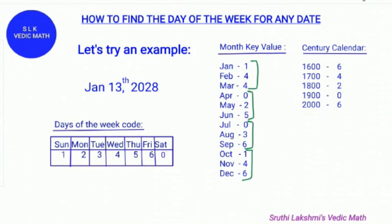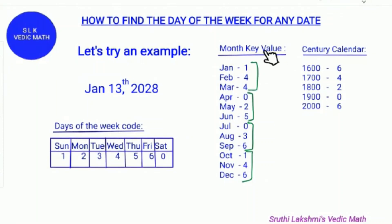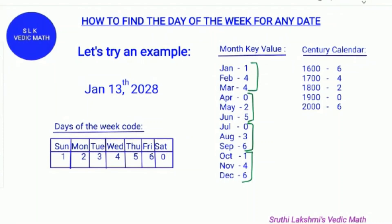First, you need to remember these three things: the day of the week code, the month key value, and the century calendar.